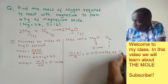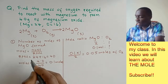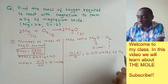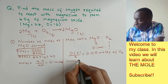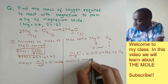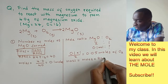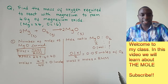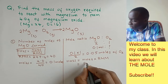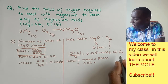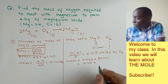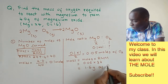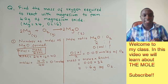Now the next thing is to use the same formula to calculate the mass of oxygen. Substituting, the mass of oxygen equals the number of moles multiplied by the relative molecular mass — I say relative molecular mass because oxygen is a molecular substance. So we have 0.05 multiplied by 32 (which is 16 × 2), and this gives us 1.6 grams of oxygen gas. That is how you calculate, and it's quite easy.